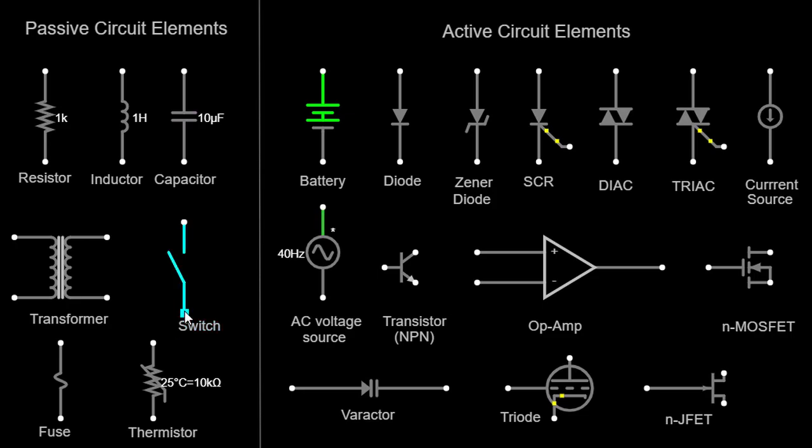Fuse. A fuse is a protective device used in electrical circuits to prevent damage from excessive current. It consists of a thin wire that melts and breaks the circuit when the current exceeds a certain threshold. Fuses are represented by a squiggly line in circuit diagrams.